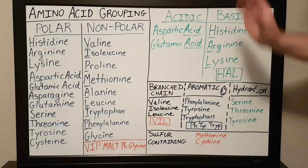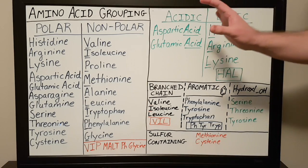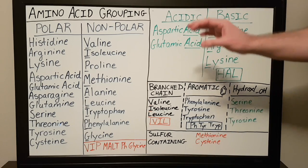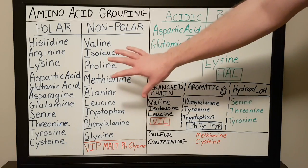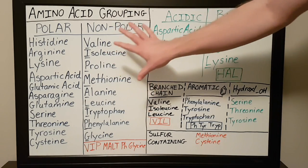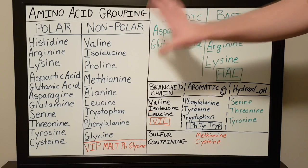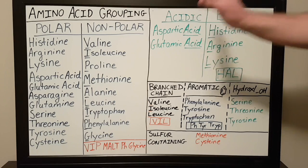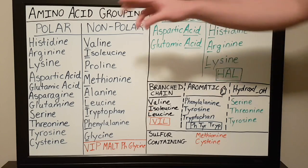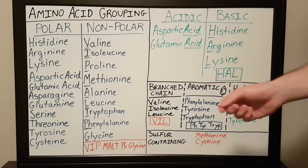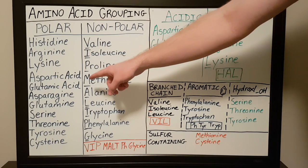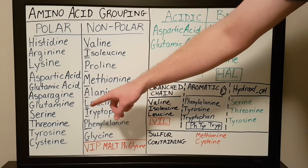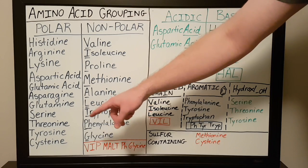The first major grouping system is based on the polarity of the amino acid. In this system, amino acids are grouped depending on whether they're polar or nonpolar. The polar amino acids are histidine, arginine, lysine, aspartic acid, glutamic acid, asparagine, glutamine, serine, threonine, tyrosine, and cysteine.